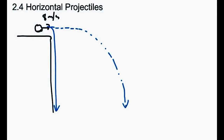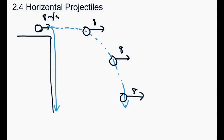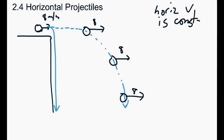One thing you have to be careful of is that the speed of 8 meters per second horizontally stays constant. We've got nothing slowing that ball down once it's in midair — other than wind resistance, which we'll ignore. There's nothing causing the ball to stop until it hits the ground. So that 8 meters per second is going to stay exactly the same throughout the entire trip. Because the horizontal velocity is constant, we can just use the easy formula: velocity equals distance over time.